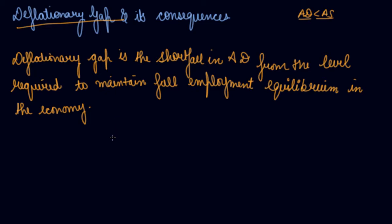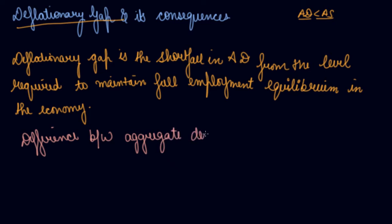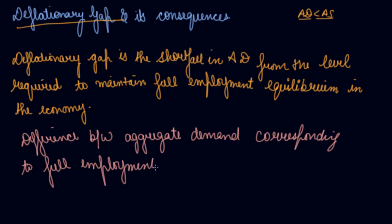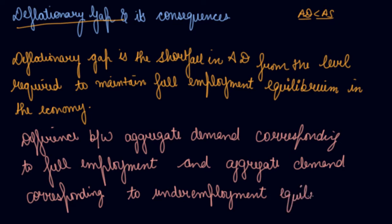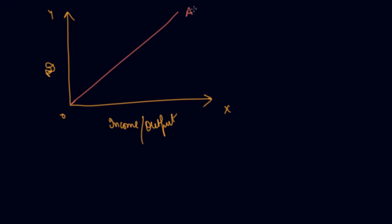The deflationary gap is measured as the difference between your aggregate demand corresponding to full employment equilibrium and your aggregate demand corresponding to underemployment equilibrium. Let's see this graphically. We take a 45-degree straight line — that is, your aggregate supply is equal to your income. We have done this before.